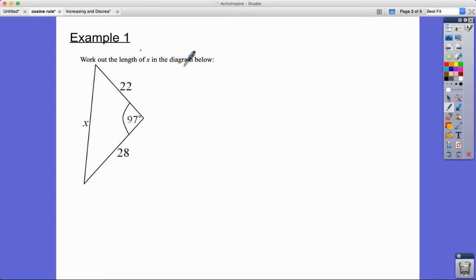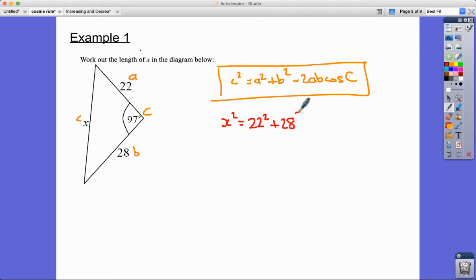Work out the length of x in the diagram below. So I'm going to label these things. I know I'm going to be using this formula c² = a² + b² - 2ab cos C. The pairing - I don't know the pairing, but I'm going to call this c and this small c, and then these can be a and b because it'll just fit nicely into my formula. So I've got x² = 22² + 28² - 2 × 22 × 28 × cos 97.